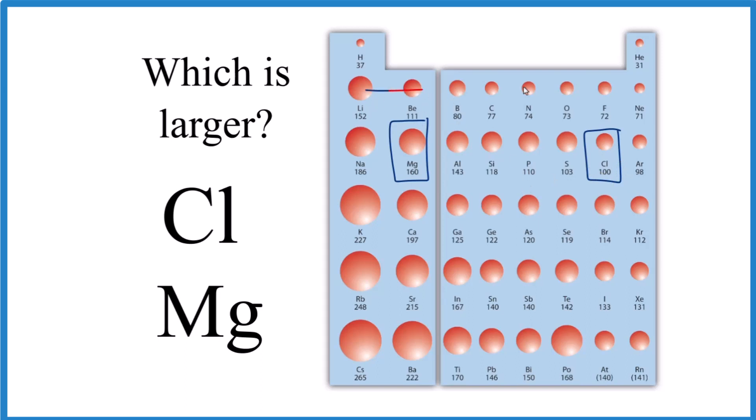The other trend is when we go across the periods on the periodic table, the atomic radius decreases. We have magnesium here, we go across, and here's chlorine. So in answer to our question, because of that trend, magnesium is larger than chlorine. Magnesium has a larger atomic radius than chlorine.